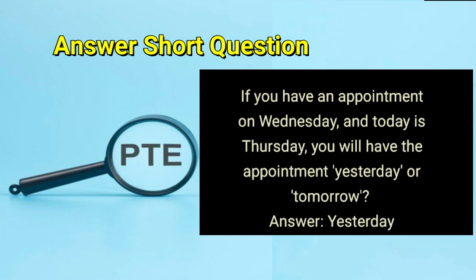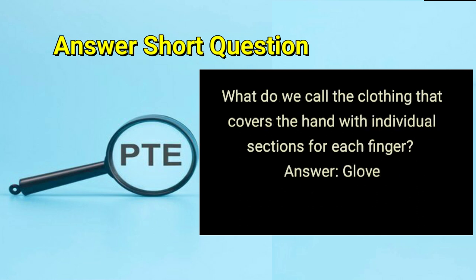If you have an appointment on Wednesday and today is Thursday, you will have the appointment yesterday or tomorrow? Answer: yesterday. What do we call the clothing that covers the hand with individual sections for each finger? Answer: glove.